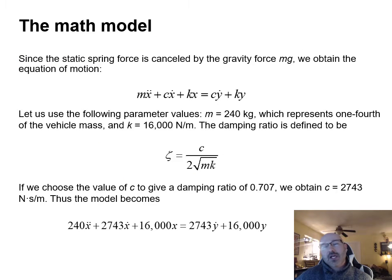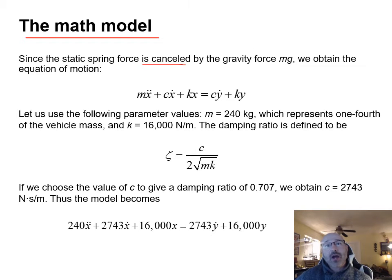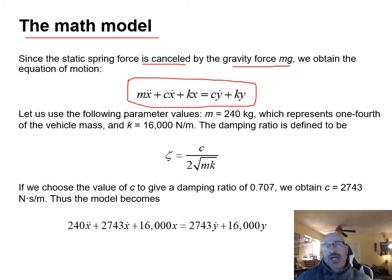Next let's look at a mathematical model. Since the static spring force is cancelled by the gravity force mg, we obtain the equation of motion: m·x-double-dot + c·x-dot + k·x = c·y-dot + k·y.